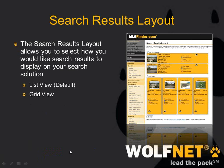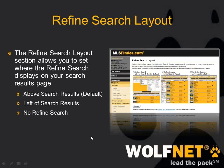The search results layout section — basically there are two different layouts you can choose from. The list view, which is the default, will list them horizontally. The grid view will do it vertically. The refined search box is a box of filters that appears on a search results page. You can either choose to have it on the top, which is the default, on the side bar, or none at all if you just want a cleaner look showing just the results of whatever they originally searched for.